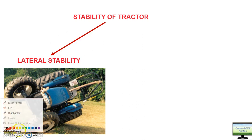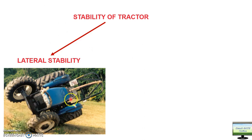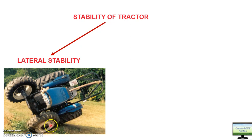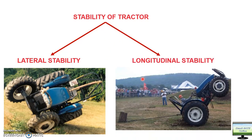In lateral stability, the tractor is overturning along the axis passing through the line joining the front axle center and rear axle center. If the tractor turns over that axis it is called lateral instability; if it does not turn, it is called lateral stability.